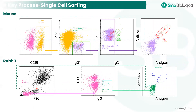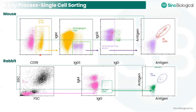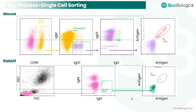There are several key parts involved in single B cell sorting. For mouse, available B cell markers such as CD19 antibodies make it easy to isolate single B cells. We also use IgG markers to select positive cells and IgM and IgD for negative selection. In addition, we can use antigens to obtain antigen-specific single B cells. For rabbit, there are few B cell markers available, so we can only use IgG and IgM markers to select IgG-positive rabbit B cells, followed by antigen-specific targeting.